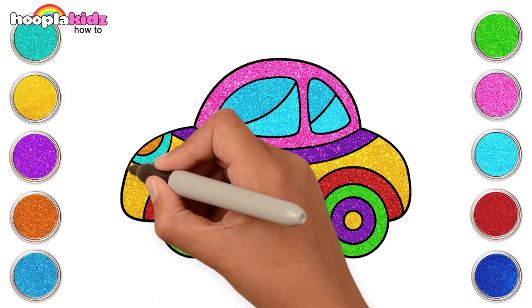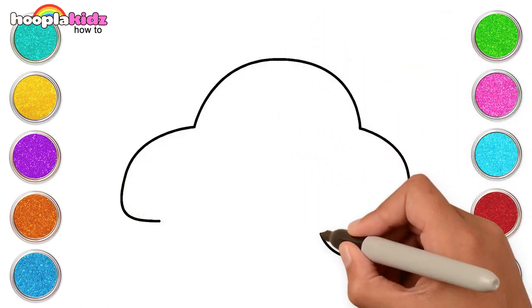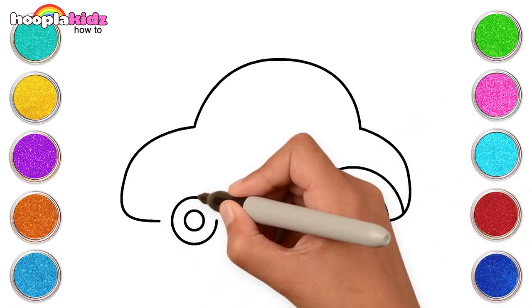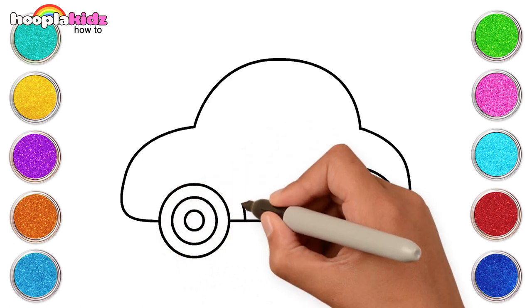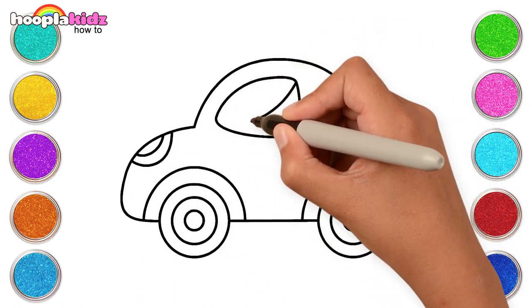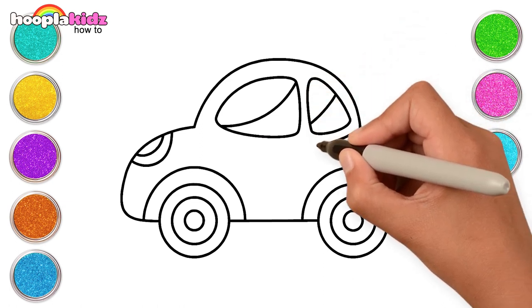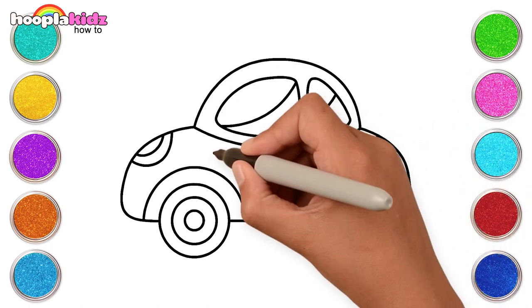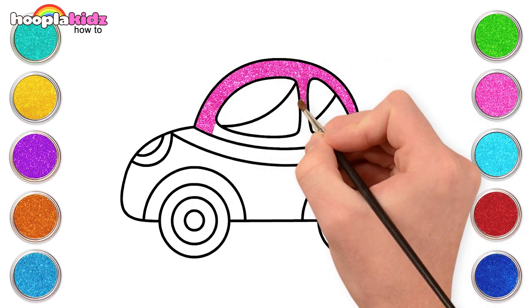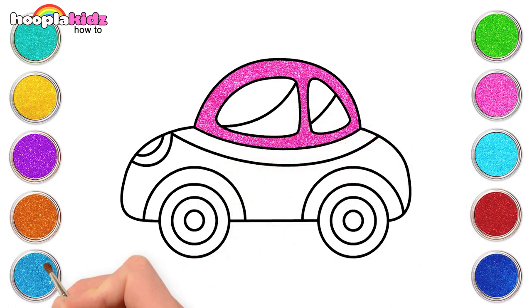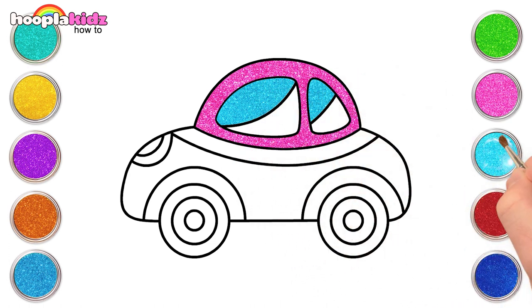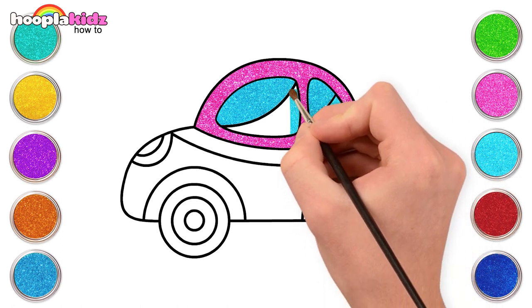Let's draw a car kids. Start with three curves. Three circles for the wheels. Connect to do the same for the other wheel too. Make the headlights and the windows. Some final touches. And done. Time to add magic. A glittery pink. Blue and cyan for the windows.